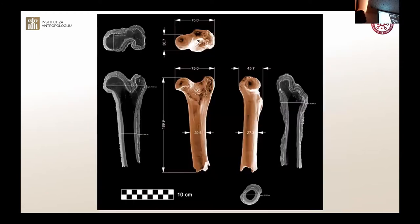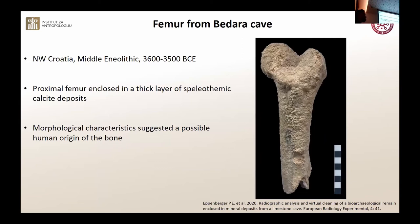So basically, we virtually cleaned away the whole speleothem calcite, and we got a morphologically completely new bone. We managed to measure the bone, and then our zooarchaeologist checked it. It wasn't a human bone — it was a pig femur. But as you can see, when you look at it, it very closely resembles a human femur.